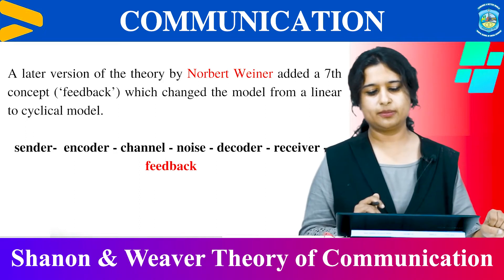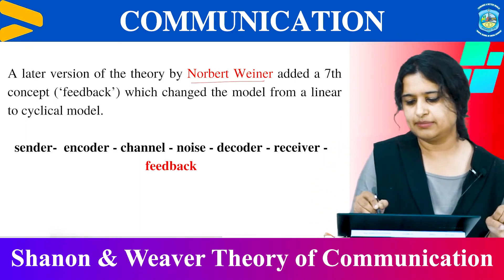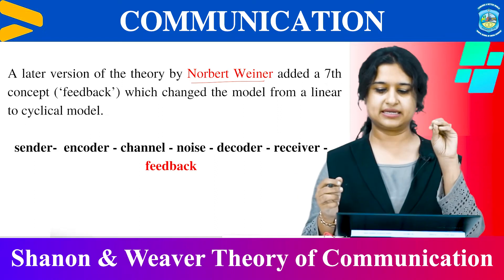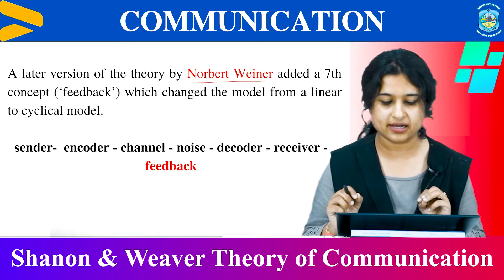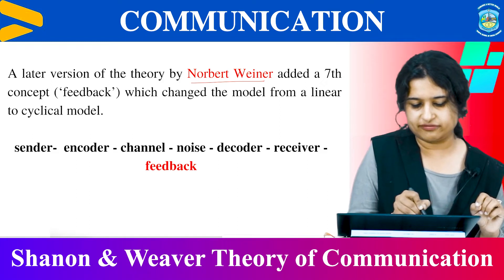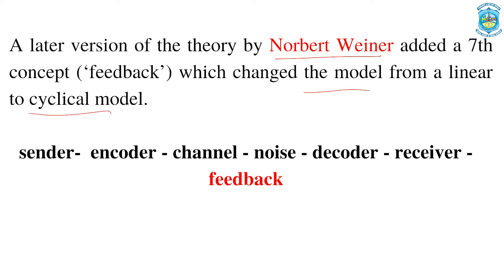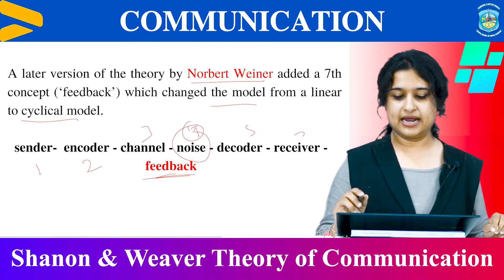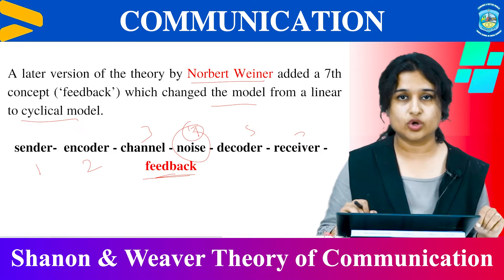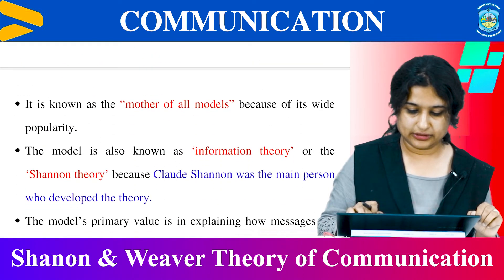A later version of the theory by Norbert Wiener is important because he is the one who came up with the seventh element called feedback. He added the seventh concept called feedback, which changed the model from linear to cyclical. You can see again in the picture: sender, encoder, channel, noise, decoder, receiver, and feedback. The seventh term was given by Norbert Wiener.